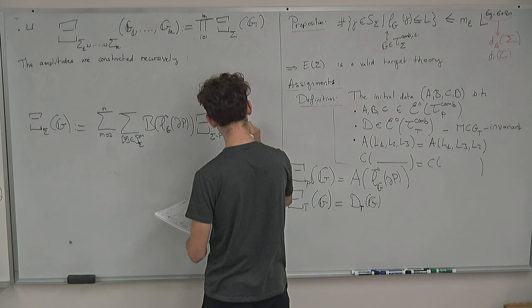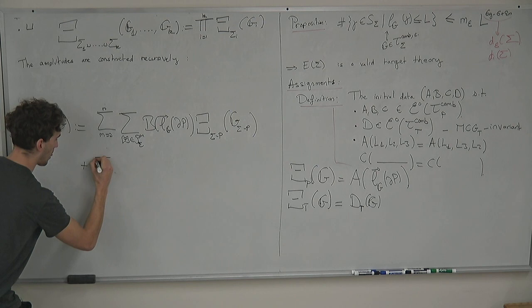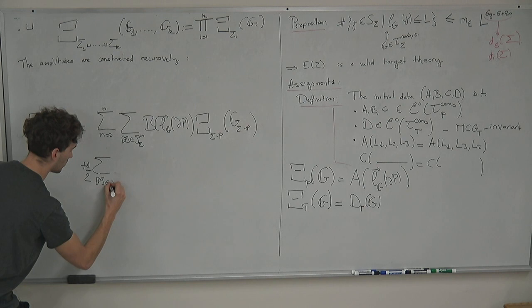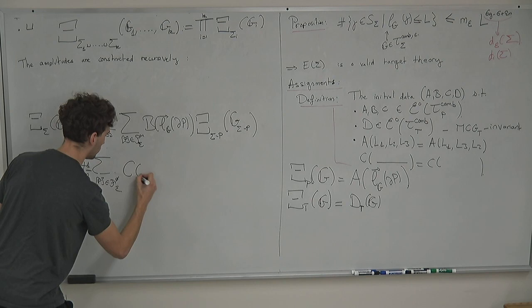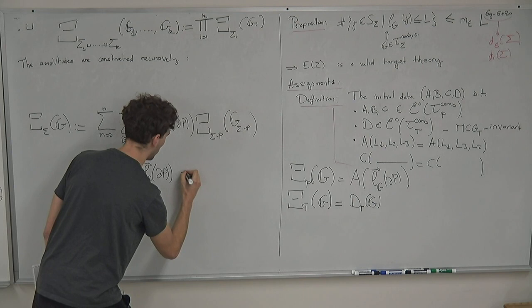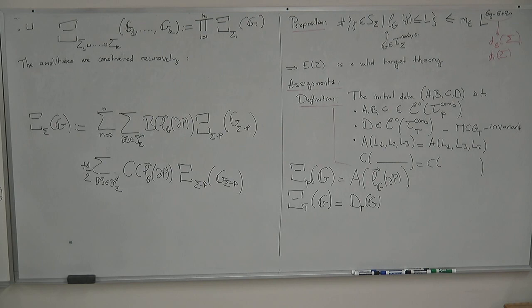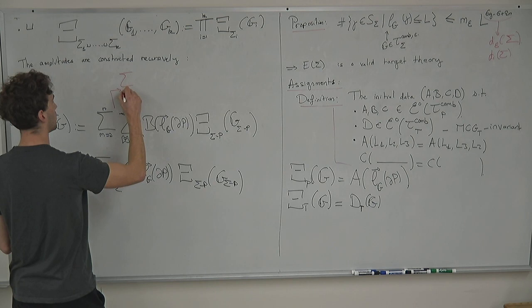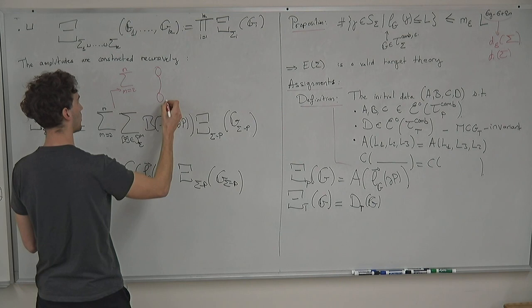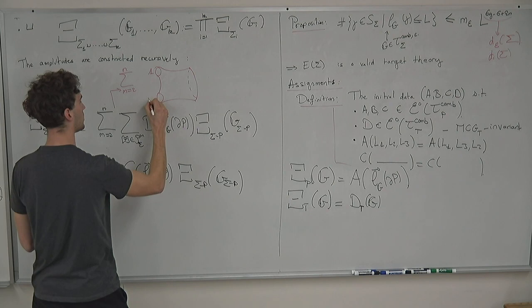The amplitudes are constructed recursively via the GR formula — it is the same formula Jorgen showed this morning. It is a sum over m equal to 2 to n, and a sum over embedded pairs of pants. This gives the B term from the initial data times the amplitude on the cut surface once we have removed the embedded pair of pants. There is also the C part with a one-half factor.